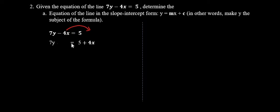So in the next step, we're seeing 7y equals 5, and this minus 4x now becomes positive 4x, or plus 4x.